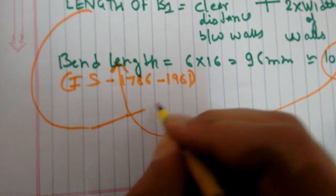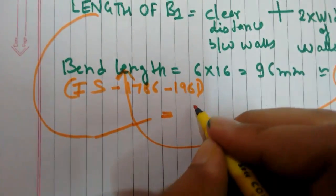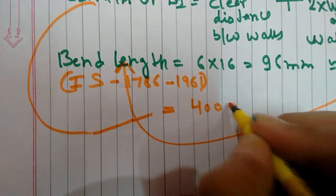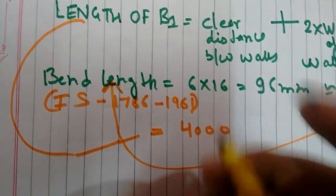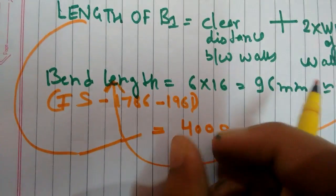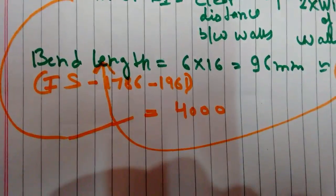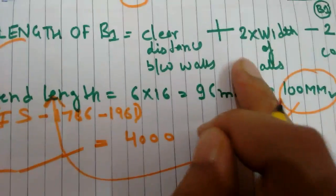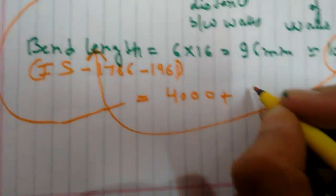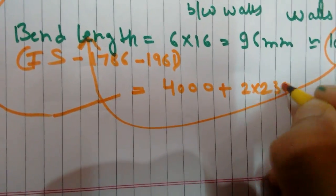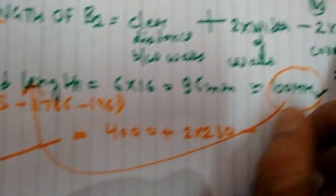Plus 2 times width of wall, which will be equivalent to plus 2 times 230, minus 2 times bar cover.